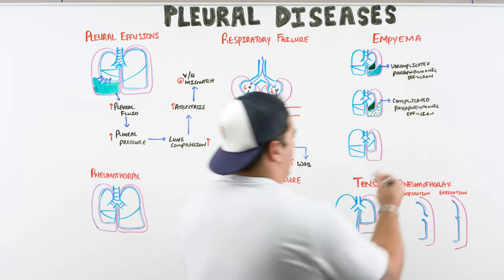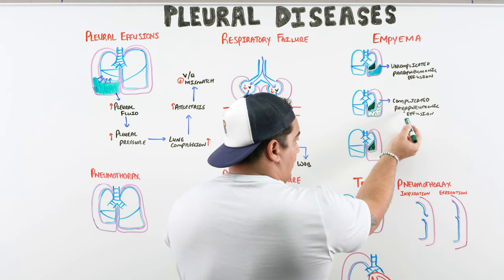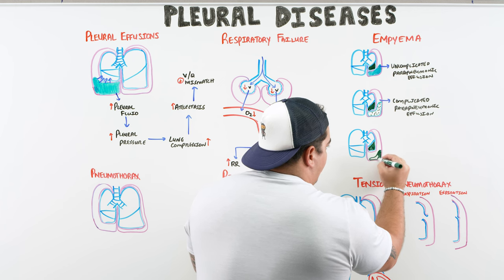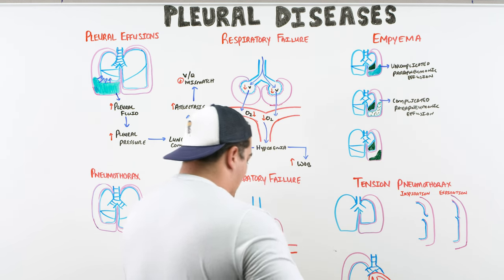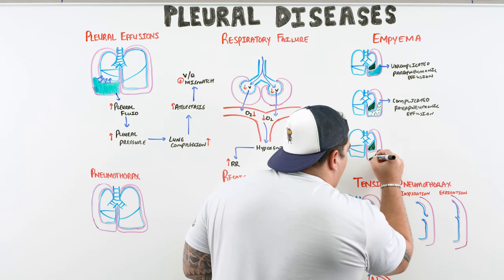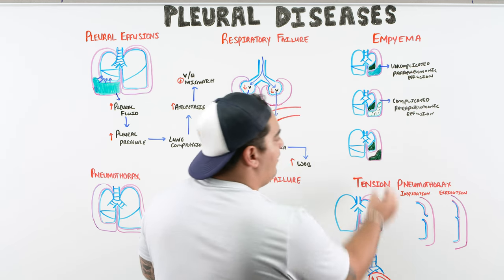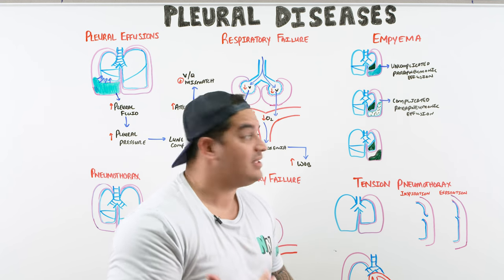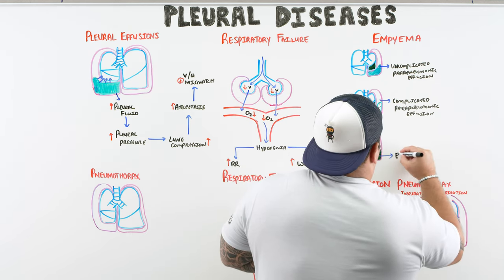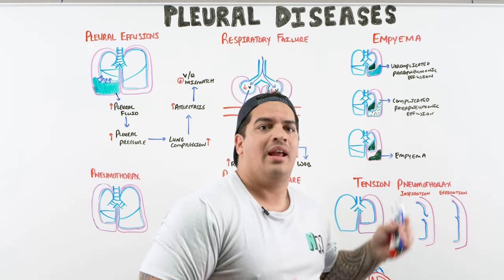In the worst case scenario, the bacteria spread further, organize within the pleural space, and recruit large numbers of white blood cells. They then cause a fibrotic shell to form, creating a loculated collection. This loculated effusion is filled with pus — bacteria, dead cells, and white blood cells. This is now called an empyema.